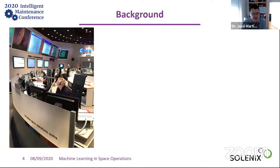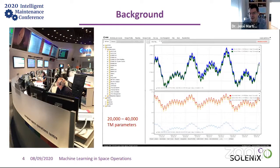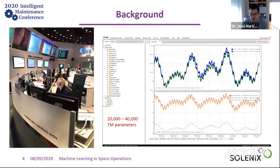The background for our anomaly detection work is space operations. One of our major clients is the European Space Agency. What you see is the control center where you manage a satellite — it's remote management and control. The data looks like mostly time series with different sampling rates.